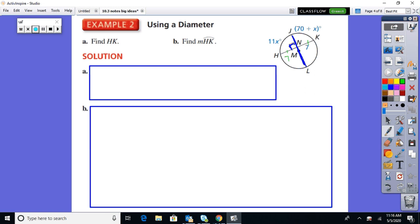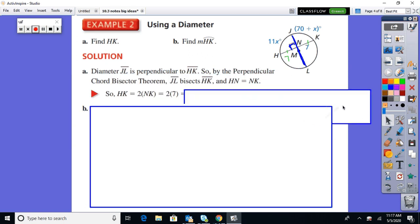Therefore, 7 on each side, since they gave me 7. They had to give me this 7, so then I know I can put that 7 in. So therefore, H to K is just 7 plus 7, or 14.